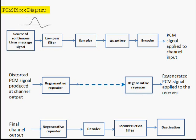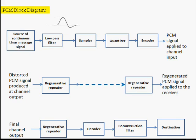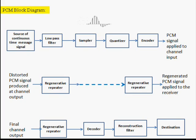The Nyquist criteria states that the sampling frequency must be greater than or equal to twice the maximum frequency of the input signal. The filtered signal is sampled in a sampler in order to get a discrete time, continuous amplitude signal.